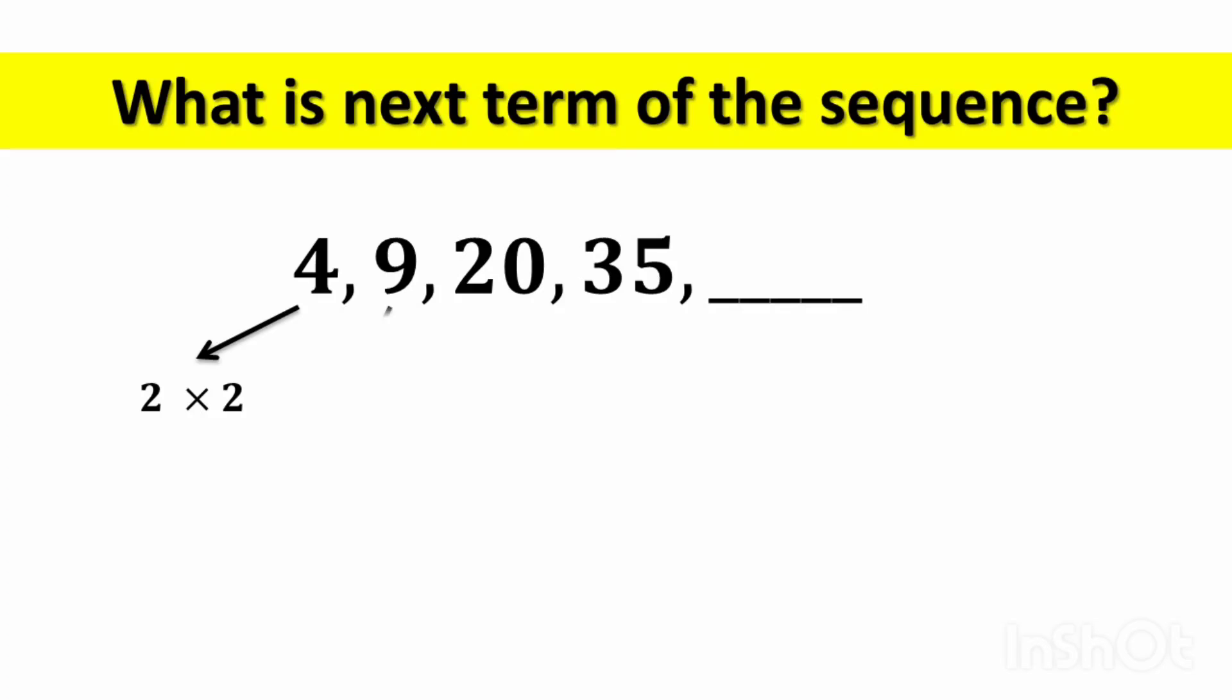Similarly, 9, 3 multiplied by 3. Then, 20 can be written as 4 multiplied by 5. And 35 can be written as 5 multiplied by 7.